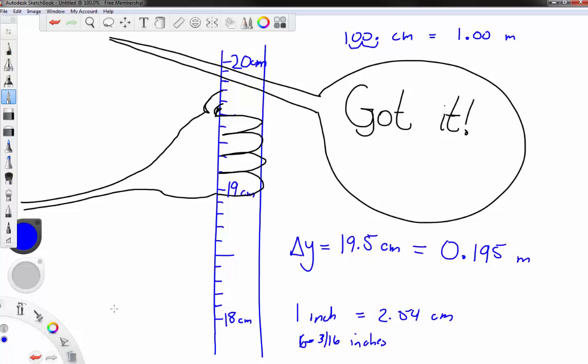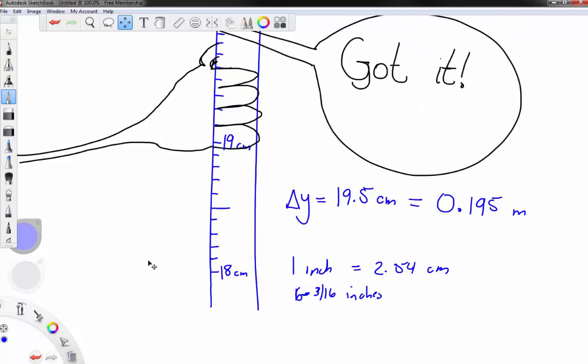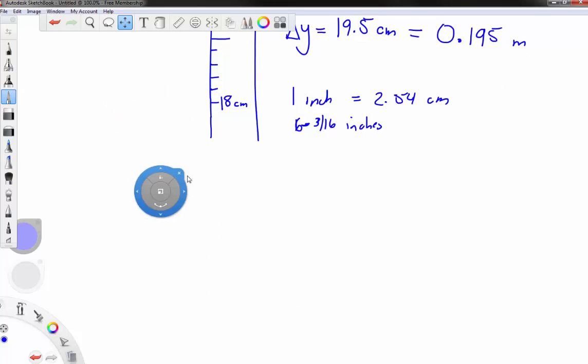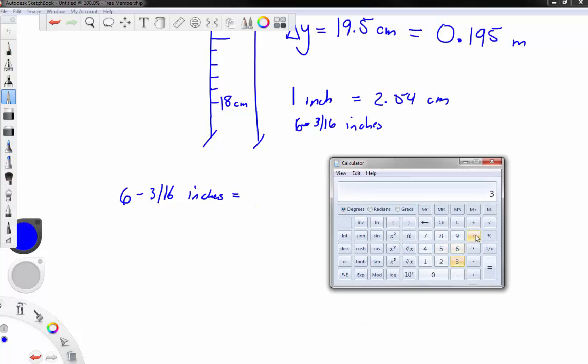So how many is that in meters? Well we have to do a conversion in order to get the answer there. So your conversion is that you have six and three sixteenths inches which is equal to basically six plus three over 16. So let's first figure out how many three sixteenths is. So three divided by 16 is equal to 0.1875. Add six to that.